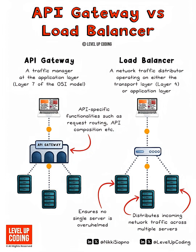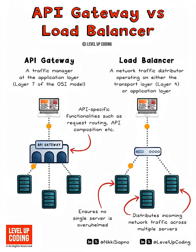An API Gateway is like a smart traffic cop that understands the content and context of requests, while a Load Balancer is like a traffic distributor that spreads vehicles evenly across multiple roads without knowing what's inside them. In summary, an API Gateway is a smart entry point that manages, routes, and secures API requests, while a load balancer simply distributes traffic across servers to ensure reliability and performance.